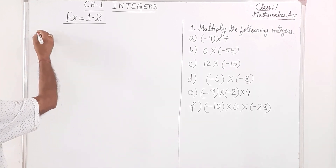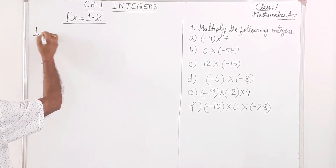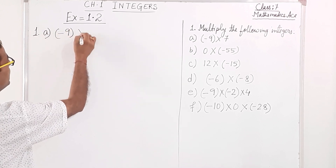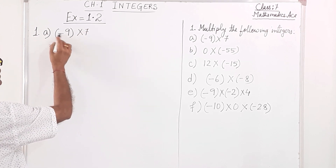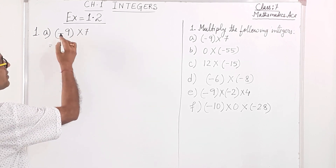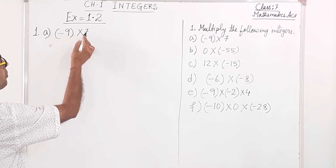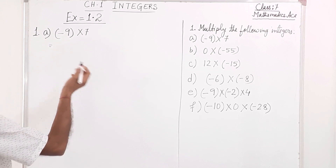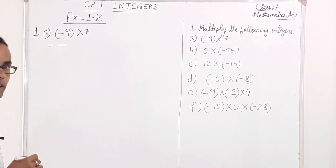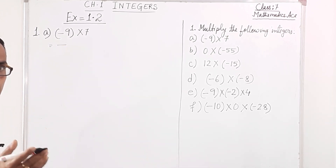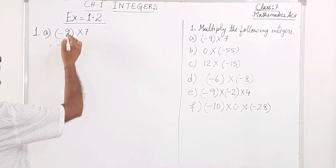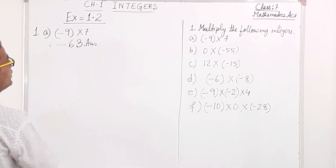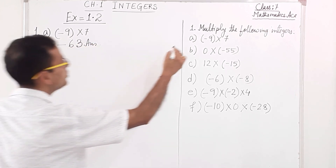Number a: minus 9 into 7. Minus is negative and 7 is positive — different sign. Different sign means the product is negative. And 9 times 7 is 63. So the answer is minus 63.